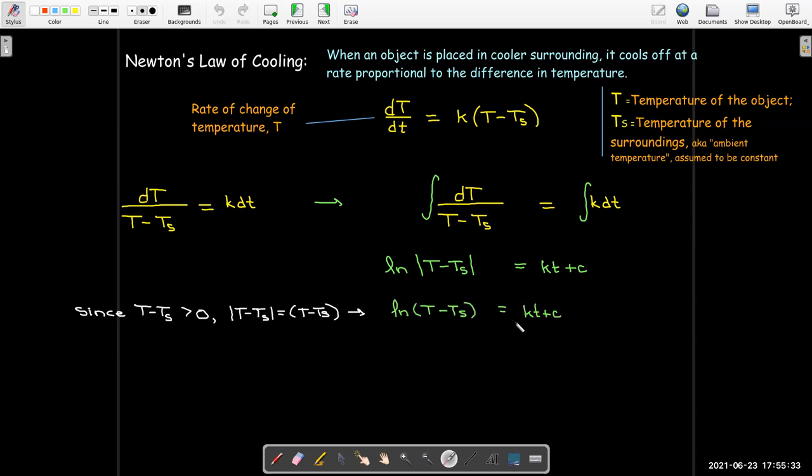And then I could write this in exponential form. So that would say T minus T_s is e to the kt plus c. And just as we saw before, it'll be useful to apply a property of exponents and write this e to the power of lowercase c times e to the power of kt. And then we'll consider e to the power of lowercase c as a constant. We'll write that as uppercase C times e to the kt.